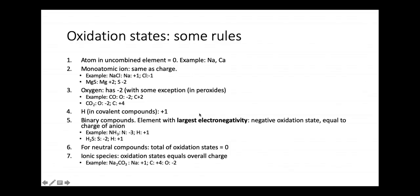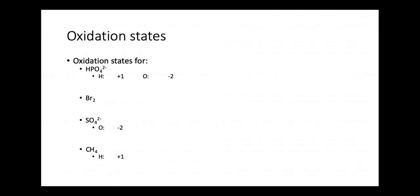Some important rules: oxygen most of the time has an oxidation number of minus 2, except in peroxides. H in molecular or covalent compounds is plus 1. Sometimes we have to include the overall charges. For just atoms like Na, calcium, or Cl2 — any element in its elemental form — it's just zero. Let's practice with that.